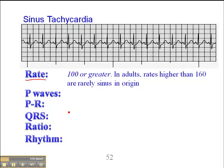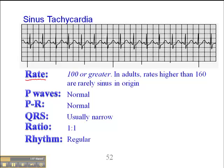In a sinus tachycardia, the P-waves are normal, the PR interval is normal, QRS is usually narrow, the ratio is 1 to 1, and the rhythm is regular.